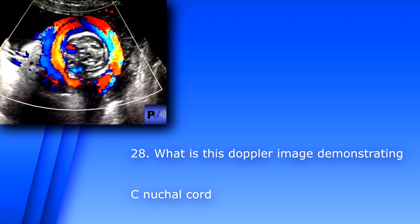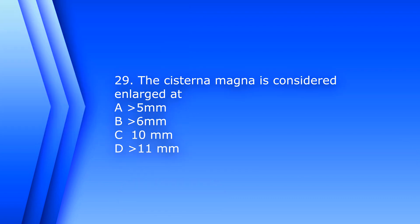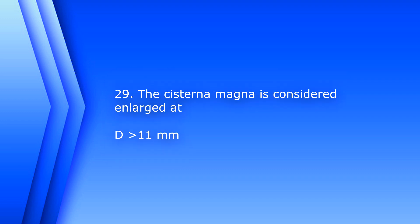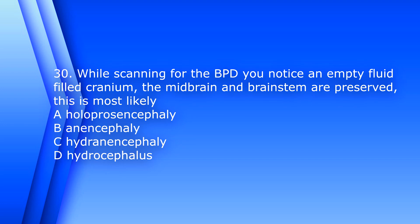So this is C, nuchal cord — the umbilical cord is wrapped around the neck. Question 29: The cisterna magna is considered enlarged at A) greater than 5mm, B) greater than 6mm, C) at 10mm, or D) greater than 11mm. The answer is D, greater than 11 millimeters.